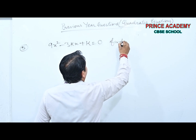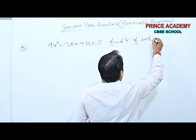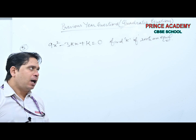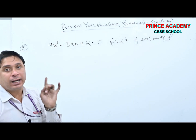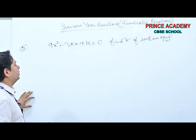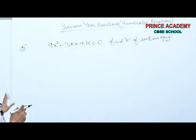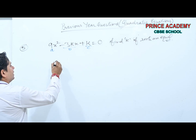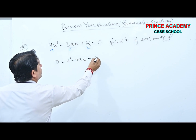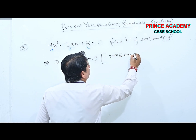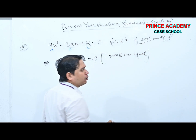Whenever roots are equal, always remember: D = 0 (discriminant is zero). Comparing with standard form ax²+bx+c: A = 9, B = −3K, C = K. Since D = B²−4AC = 0 (roots are equal, as given).